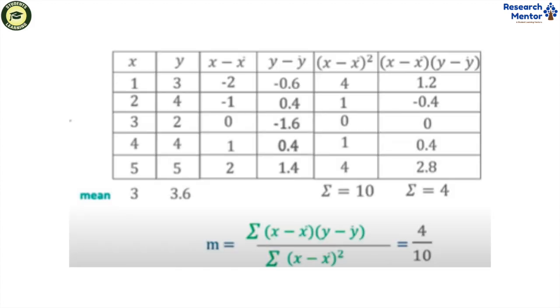Then we create tables. In the first column, the value of x. The second column, the value of y. Third column, x minus x̄. Fourth column, y minus ȳ. Next column, (x minus x̄) squared. Last column, (x minus x̄) times (y minus ȳ).